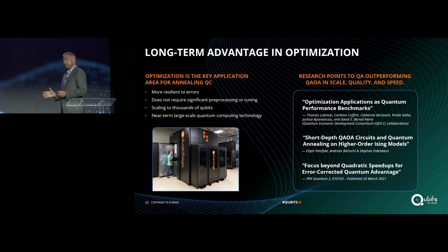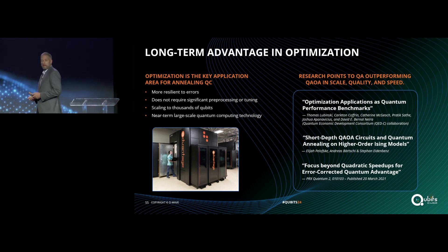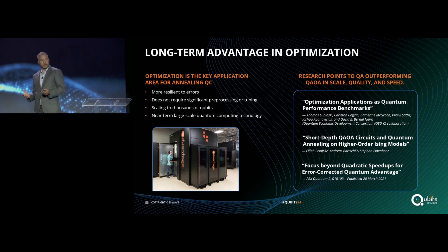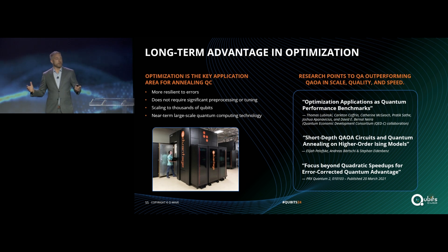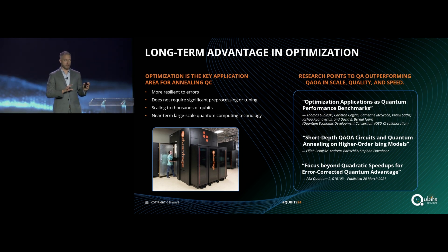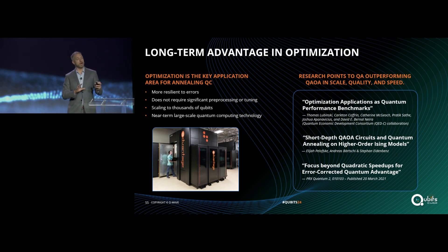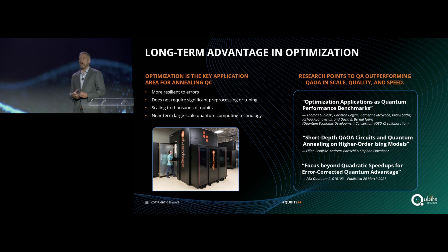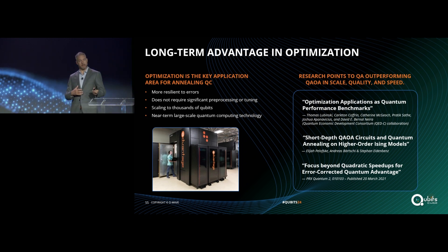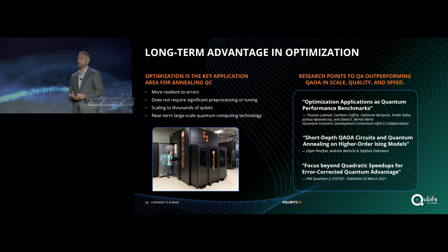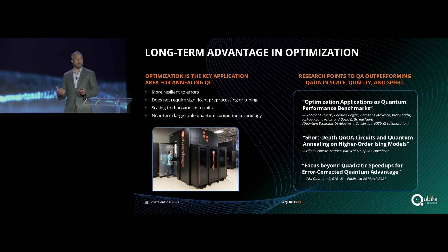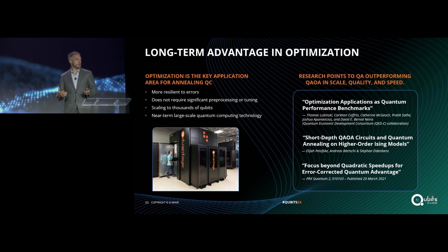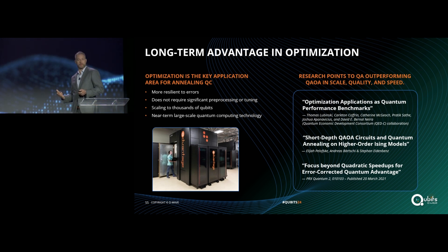We did that for a few reasons. Annealing systems and architectures are more resilient to errors. The qubit controls are constantly on throughout the annealing process as we initialize the Hamiltonian and evolve it toward a hard target Hamiltonian, so annealing architectures are naturally more resilient to fluctuations and interactions with the environment.